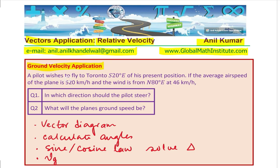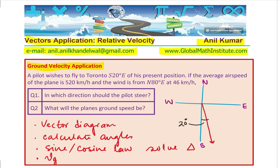A pilot wishes to fly to Toronto, south 20 degrees east. This is the south direction, that is north, that is east and west. From south 20 degrees east — that is what you want — kind of like this, where the angle given here is 20 degrees.